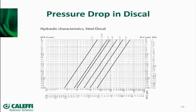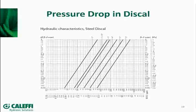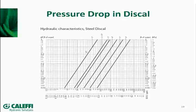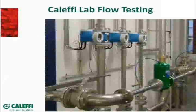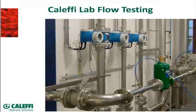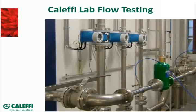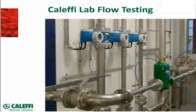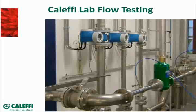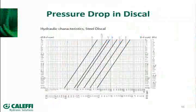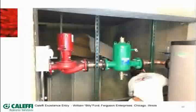We test everything we build on this bench and get our CV rating. When you buy one of our components — for example that disc-type air separator — here's the data sheet that's on the website and in our technical information. It shows both metric and U.S. units. You pick a flow rate on the bottom axis, run up the line, and see what the pressure drop is through that device at different flow rates. We design these for a typical 2 to 4 feet per second flow rate for a noise-free, trouble-free hydronic system, but we test our devices all the way out to 10 feet per second and still get excellent performance.